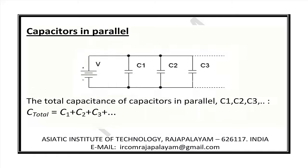The total capacitance of capacitors in parallel is equal to C total is equal to C1 plus C2 plus C3, plus any number of additional capacitors added.